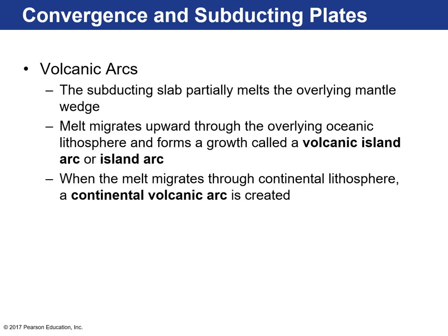Volcanic arcs are essentially a line of active or formerly active volcanoes that exist because of partially melted overlying mantle material. Melts are generated because dewatering of the surface of the subducting slab lowers the melting temperatures of the mantle wedge. They migrate upwards through the overriding plate. If those melts move through overlying oceanic lithosphere, you get a volcanic island arc. If they migrate through continental crust, you get continental arc volcanism.